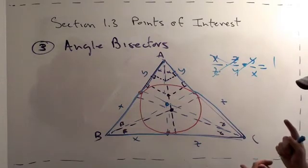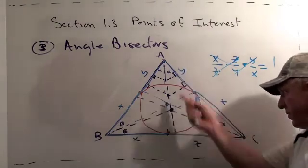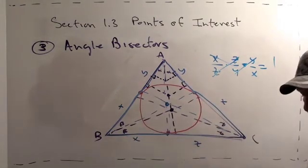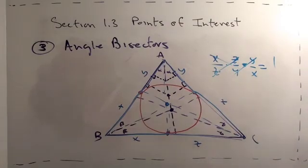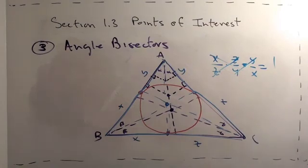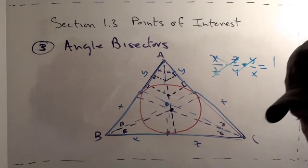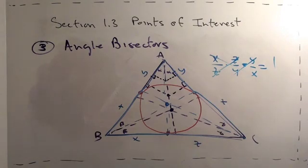So now we've learned how you construct the inscribed circle — you find the intersection point of the angle bisectors. We learned a wonderful fact about the medians: they dissect the triangle into six smaller triangles of equal area. And we learned that the perpendicular bisectors' intersection point is the center of the circumscribed circle. This is a really great section with some wonderful problems. I encourage you to take a look at the book Geometry Revisited and find the fun problems in section 1.3. Thank you for watching.